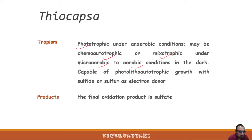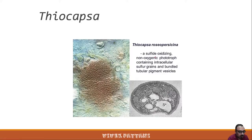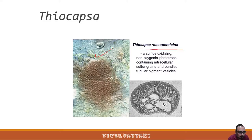Under micro-aerobic to aerobic conditions in the dark, Thiocapsa is capable of photolitho-autotrophic growth with sulfide or sulfur as electron donors, and the final oxidation product is sulfate. This is a photograph of Thiocapsa roseopersicina, a sulfate-oxidizing non-oxygenic phototroph that contains intracellular sulfur granules and bundled tubular pigment vesicles.